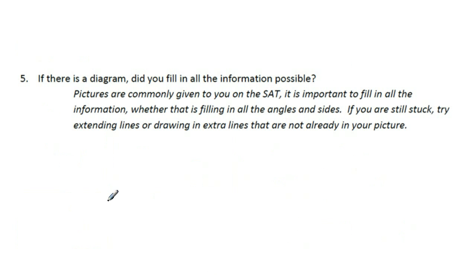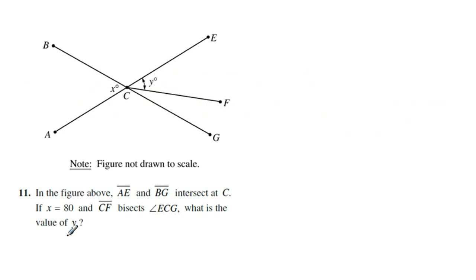Lastly here, the last main strategy I should say is, if there is a diagram, did you fill in all the possible information? Let's take a look at one of those examples. Question 11 here says, in the figure above, AE and BG intersect at C. If X equals 80 and CF bisects angle ECG, what is the value of Y? So if I was stuck here, I would just start labeling whatever I could, even if I had no idea why I was doing it. So in this case, let's label what they gave us here, which is the X is 80. So I'm going to go ahead and fill this in as 80. And I'm just going to start marking off anything else in my diagram.